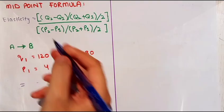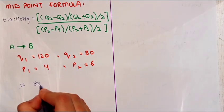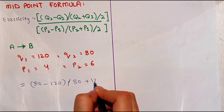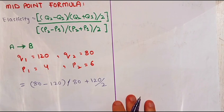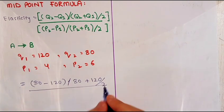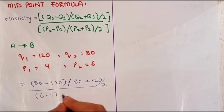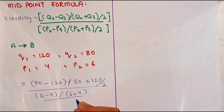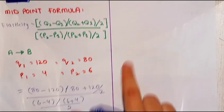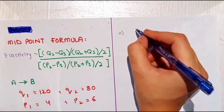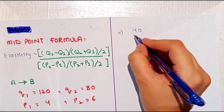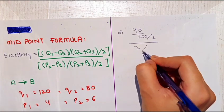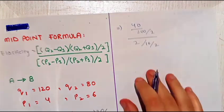Q2 is 80, so we have 80 minus 120 in brackets, divided by 80 plus 120, divided by 2. What is this? 6 minus 4, divided by 6 plus 4, divided by 2. Now when we apply this formula, we get 40 divided by 200 divided by 2, and 2 divided by 10 divided by 2.